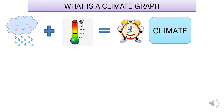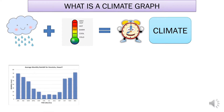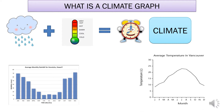So what a climate graph shows us is how much rain has fallen on average each month in a place, measured in millimetres, and then the temperature shows how hot or cold it's been in each month on average, using degrees Celsius. A climate graph shows us both of these pieces of data together on the same graph, so we can identify patterns and easily see what the climate is like.